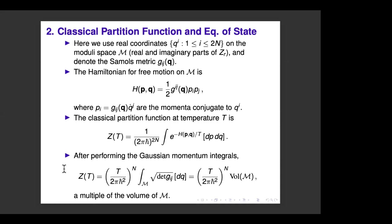Because the Hamiltonian is quadratic in momenta, you can do the momentum integrals — it's a 2N-dimensional Gaussian integral. You get factors of π and, importantly, you divide by temperature T in the Boltzmann factor. The result is that the partition function has a prefactor with powers of N and T, times the determinant of the metric from the Gaussian integral. Integrating the square root of the determinant over configuration space gives the volume of the moduli space.